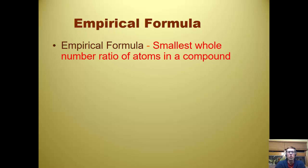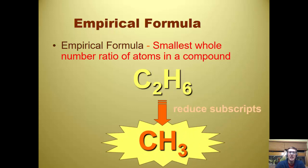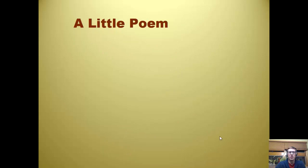We'll talk later about molecular formula, because the empirical formula doesn't always have to be the actual formula — especially with organic compounds containing carbon and hydrogen. For example, C₂H₆ is the formula for ethane, but the empirical formula reduces all the way down to CH₃. That's what we would get out of a lab. We'll get into molecular formula later. There's a little poem that helps us remember how to do these calculations.